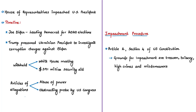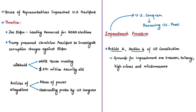Now let us discuss the process of impeachment of the US president. Impeachment is a provision that allows US Congress to remove the president. It has two chambers: House of Representatives and the Senate, and the process should be carried on in both chambers. Under Article 2, Section 4 of the United States Constitution, the president, vice president, and all civil officers can be removed from office if convicted for treason, bribery, or high crimes and misdemeanors.